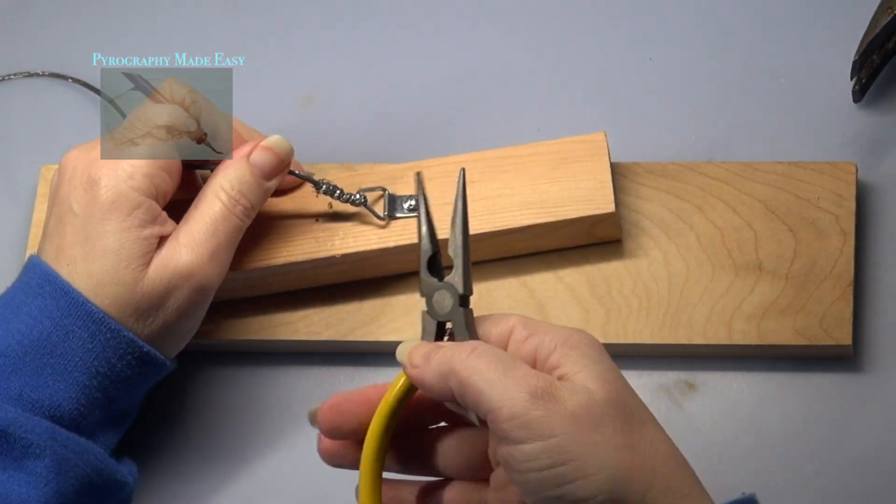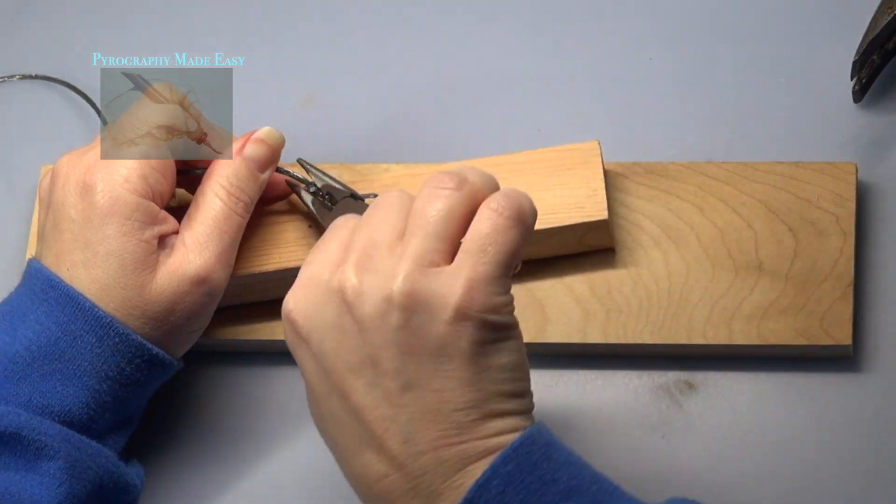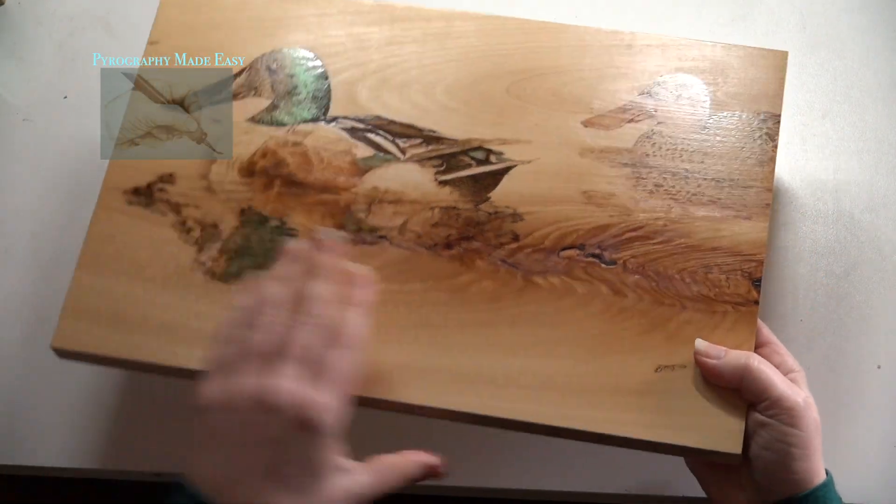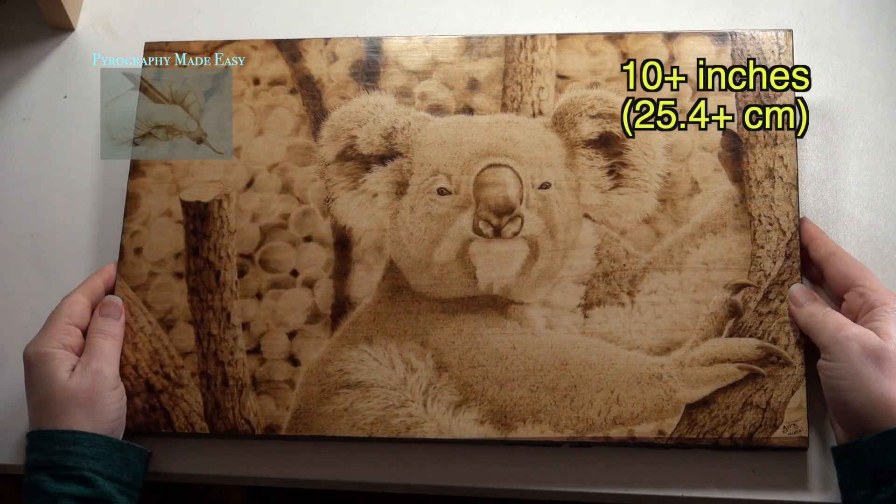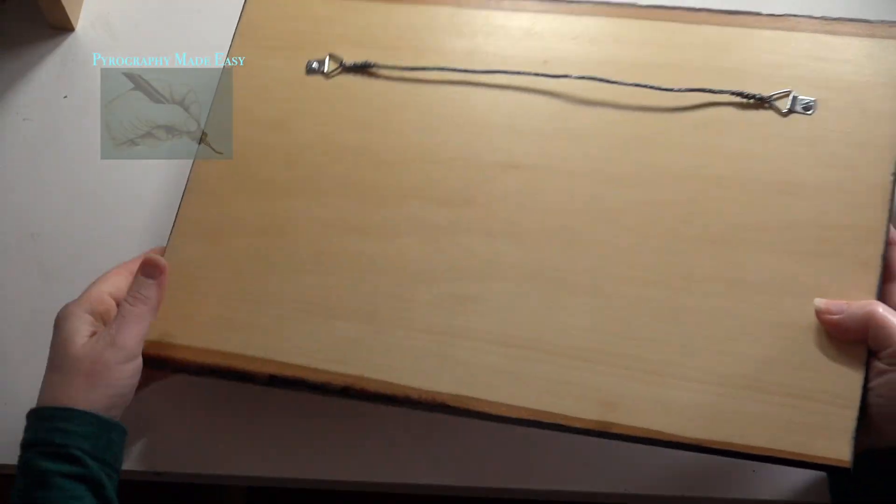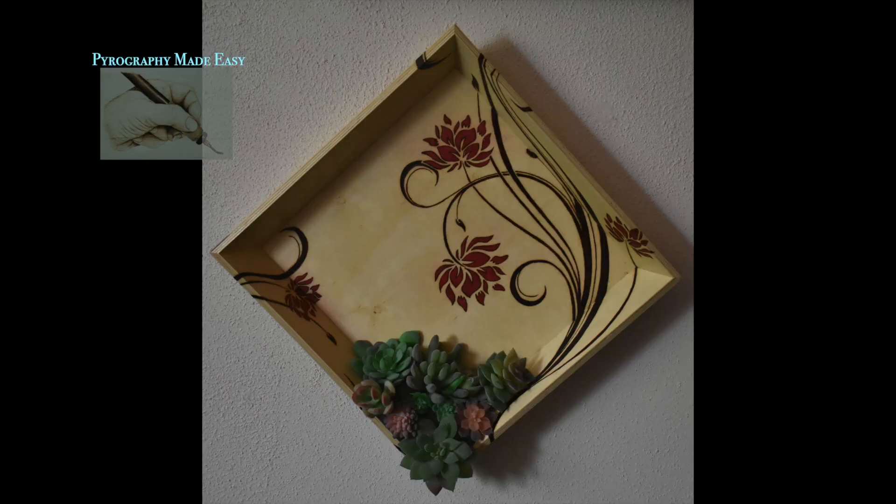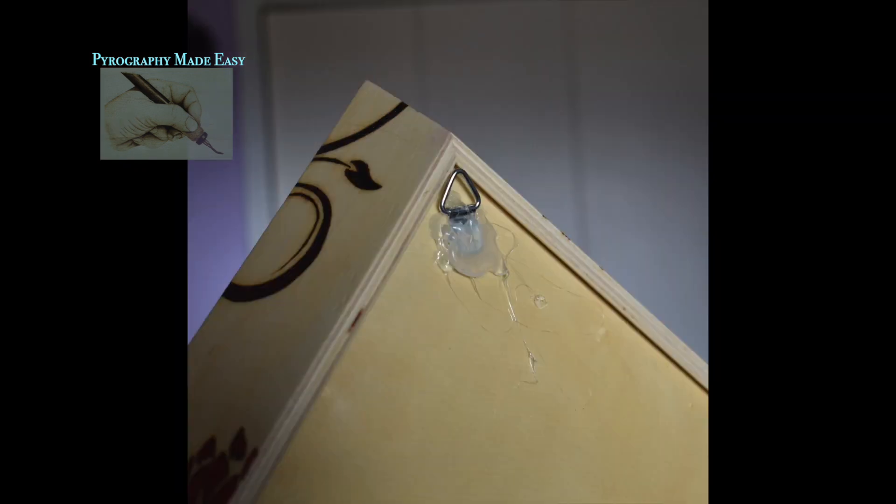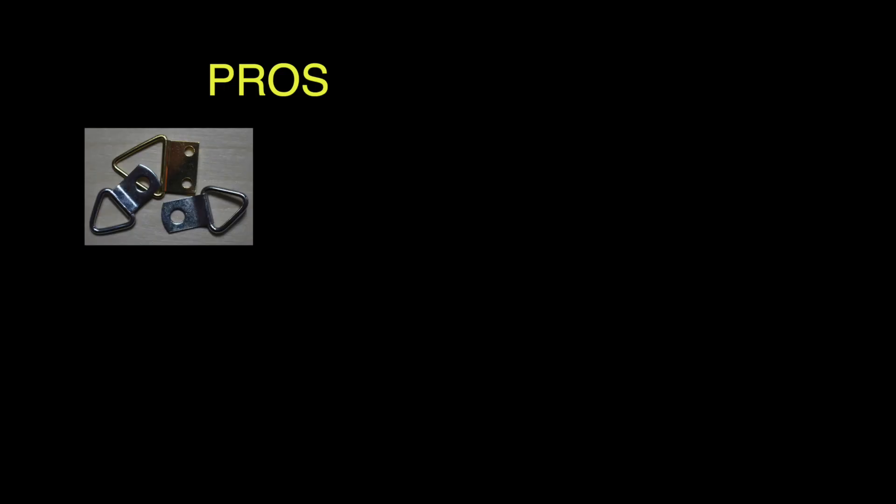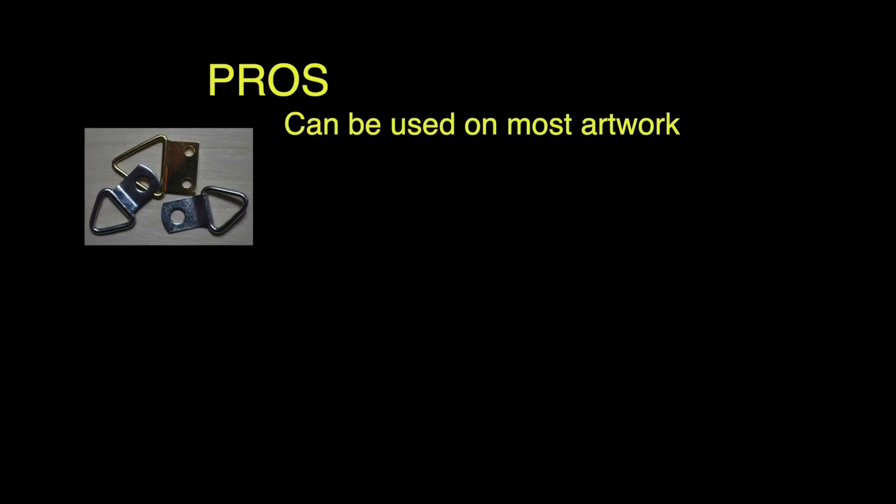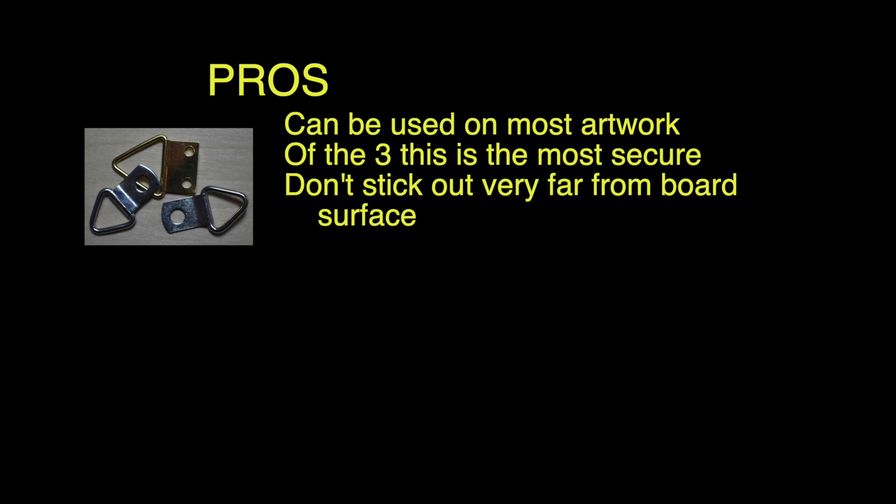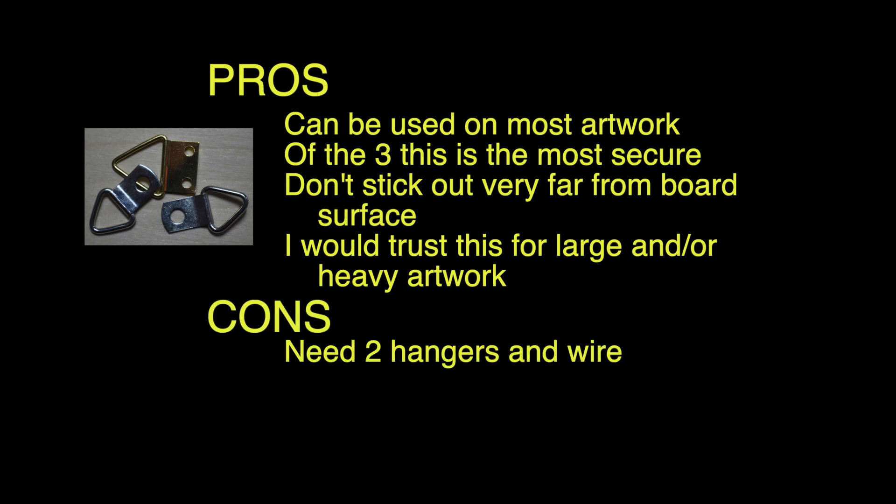I use triangle hangers on larger artwork, which I consider to be anything over 10 inches wide. The wire makes it super easy to hang the artwork on the wall. They can be used on cradled boards. I have also used a hot glue gun to attach a triangle hanger on the back of a project created on lightweight thin wood. The pros: it can be used on most artwork. Of the three I demoed, this is the most secure method. It doesn't stick out very far from the board's surface. I would trust this hanger for large and or heavy artwork. Cons: two hangers are needed plus wire. The artwork does not hang flush on the wall.